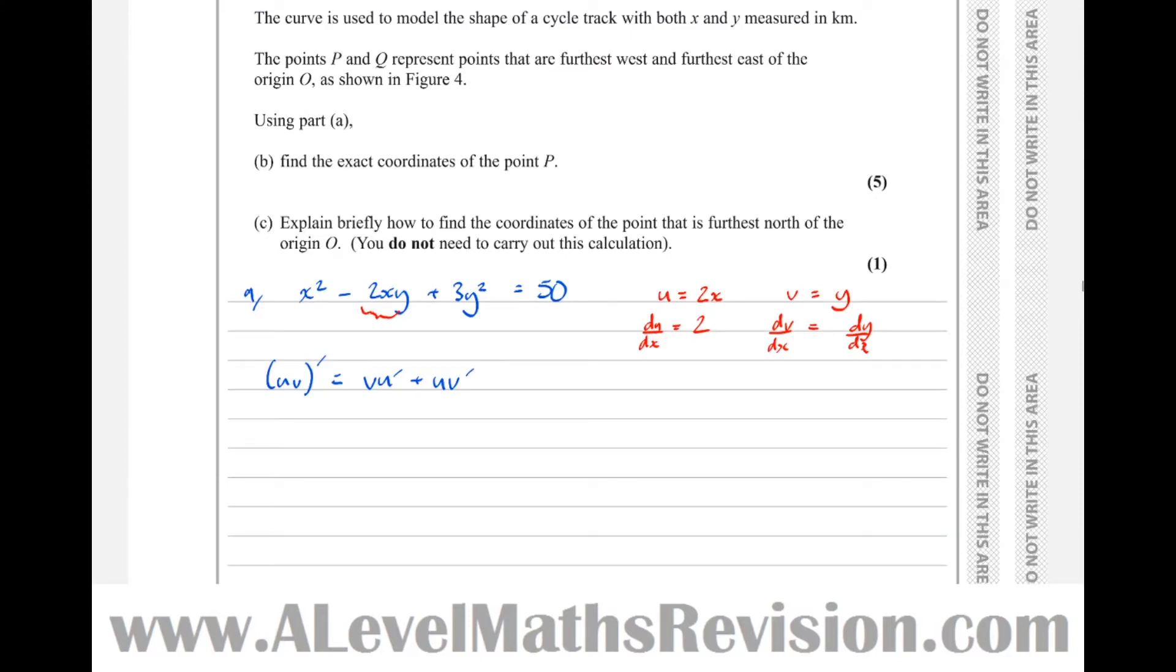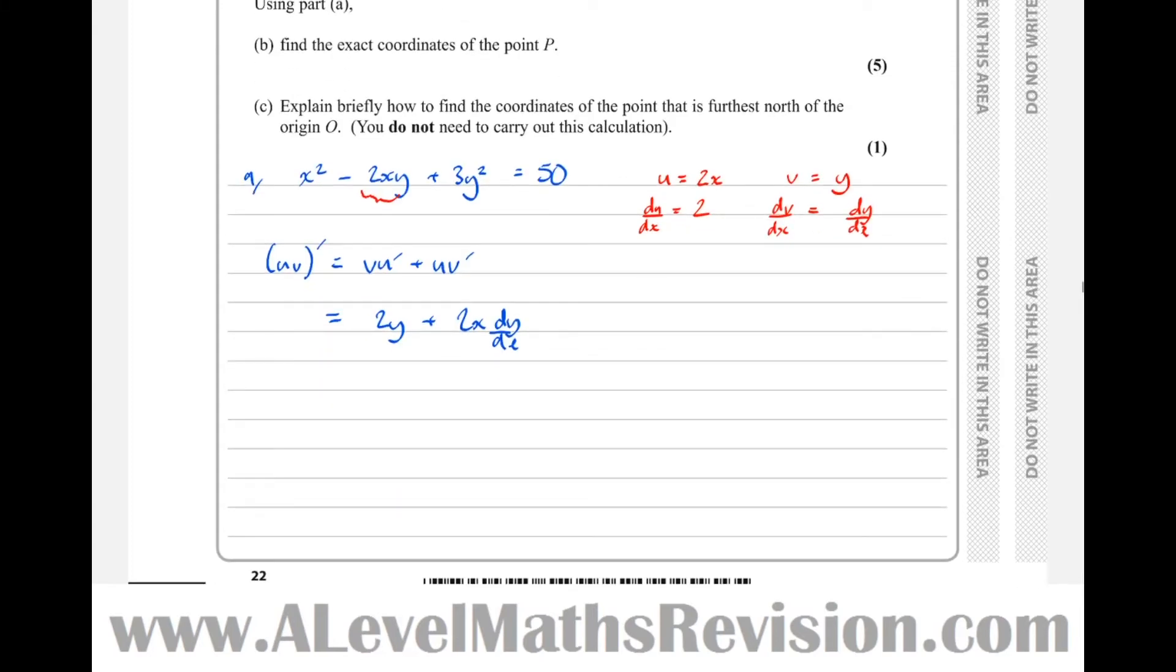So v u dash equals 2y, plus u v dash equals 2x dy by dx. So we've differentiated this bit underlined in red. Now we're ready to differentiate the whole thing.